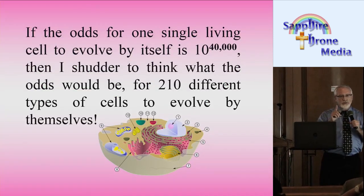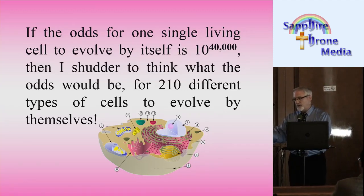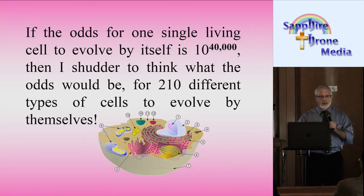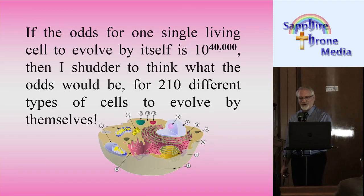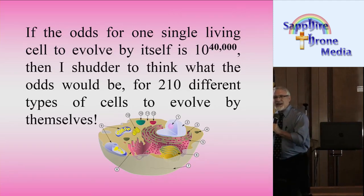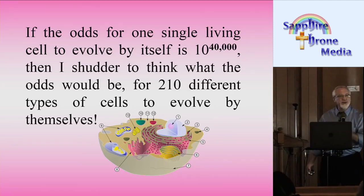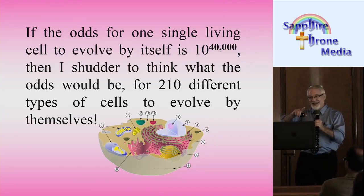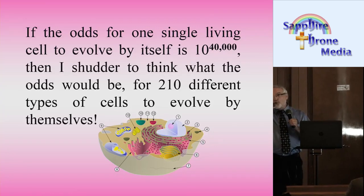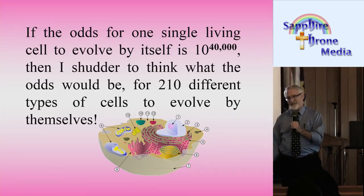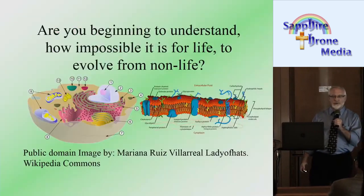If the odds for one single cell to form all on its own is 10 to the power of 40,000, and you multiply that by 210, that's 8.4 million. So the odds are 10 to the power of 8.4 million — that's a one with 8.4 million zeros after it — to form all 210 different types of cells.